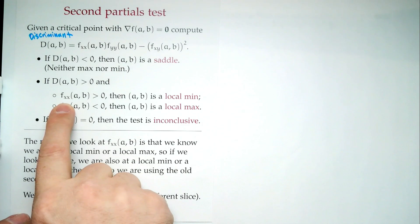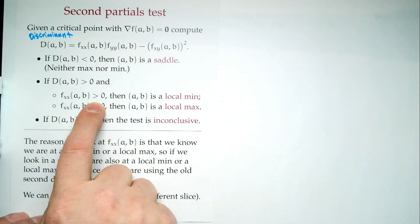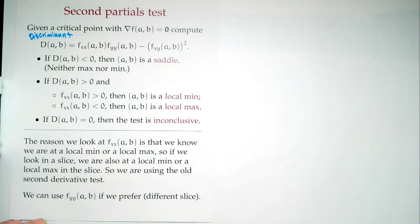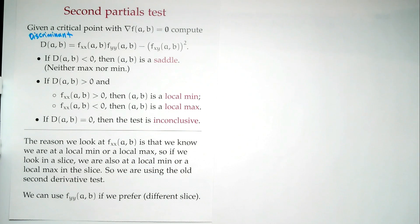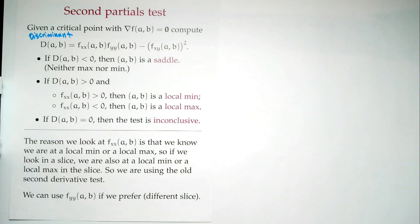The interesting case: if D is positive, we're either a local min or local max. To determine which, look at just f_xx(a,b). If f_xx is positive, the point is a local min. If f_xx is negative, the point is a local max. Note: it doesn't matter whether you look at f_xx or f_yy — if one is positive, the other will be too; they'll have the same sign in this setting.